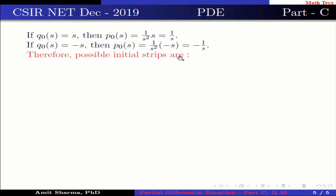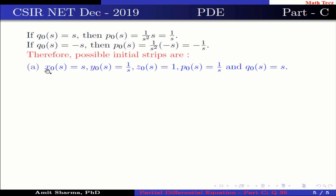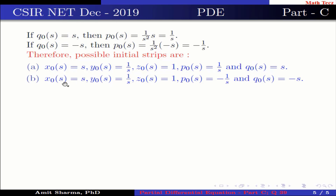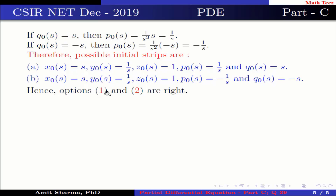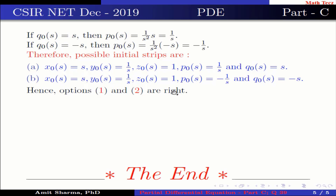Therefore, the possible initial strips are: x0(s) = s, y0(s) = 1/s, z0(s) = 1, p0(s) = 1/s, q0(s) = s; and x0(s) = s, y0(s) = 1/s, z0(s) = 1, p0(s) = −1/s, q0(s) = −s. Hence, options 1 and 2 are correct. Thank you very much for watching my video.